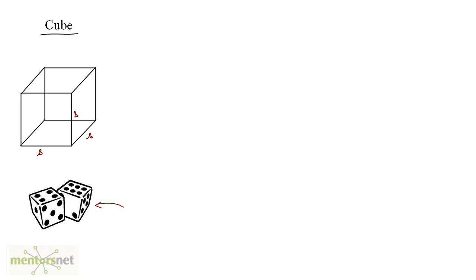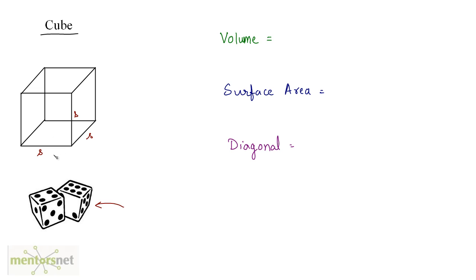Let us look at some formulas related to a cube. We will be looking at volume, the surface area, and the length of a diagonal. The volume of any consistent, even item equals the area of its base times its height. The base of this cube is a square, and the area of a square is s squared. Times the height, which is also s, gives us s × s × s, which is s cubed. So the volume of a cube is its side cubed.